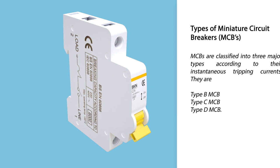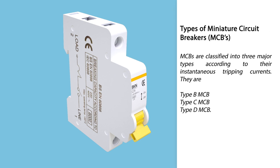Types of miniature circuit breakers: miniature circuit breakers are classified into three major types according to their instantaneous tripping currents — Type B, Type C, and Type D.